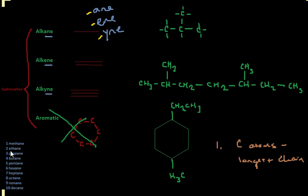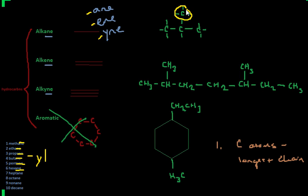The way that we name substituents is we use the same part of the name that we have here, but disregard the A-N-E, or the E-N-E, or whatever ending you're using — and it's going to be Y-L. So for instance, we have a substituent off of our main chain that's only one carbon atom. One carbon atom would be methyl.